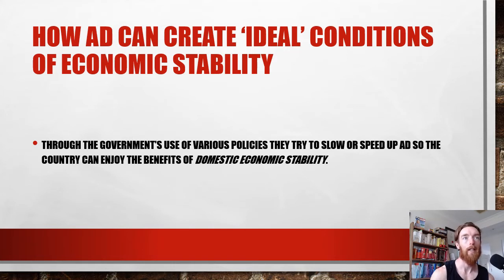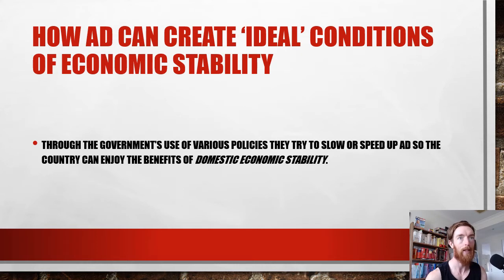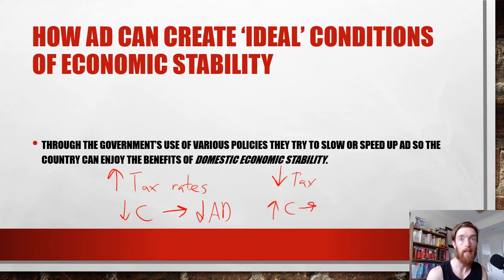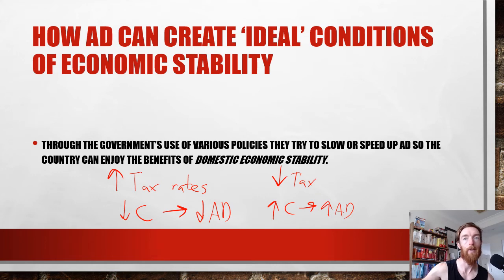How aggregate demand can create ideal levels of economic stability. Through the government's use of various policies, they try to slow or speed up aggregate demand so the country can enjoy the benefits of domestic economic stability. For example, if they increase tax rates, that leads to less private consumption spending, which lowers aggregate demand and helps slow things down in a boom. If they want to speed up spending, decreased tax leads to increased consumption spending and increased aggregate demand — manipulating things to reach the right level of economic activity.